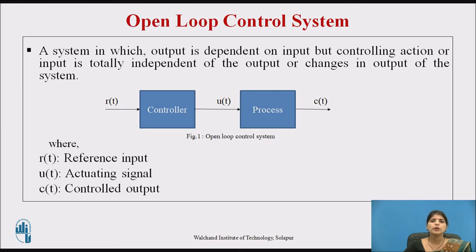Let us start with open loop control system. A system in which output is dependent on the input but the controlling action or input is totally independent of the output — we can say the changes in the output of the system do not affect the input. In figure 1 there are two blocks: controller and the process. Reference input R(t) is applied to the controller which generates the actuating signal U(t) required to control the process, and the process gives the desired control output C(t).